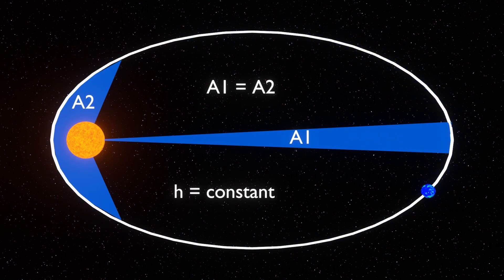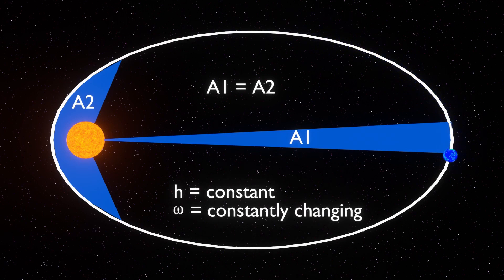This tells us that angular momentum is conserved in an orbit, but angular velocity is constantly changing.